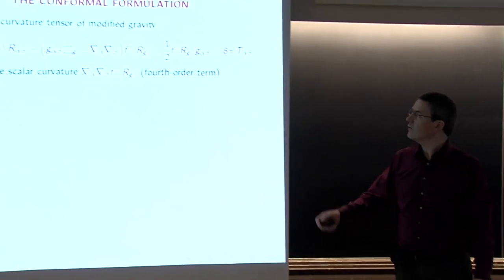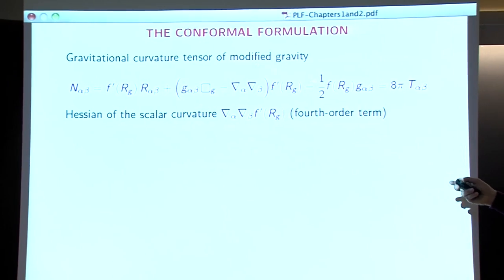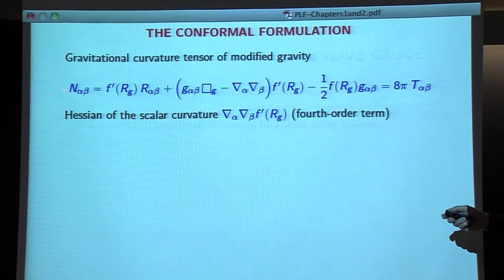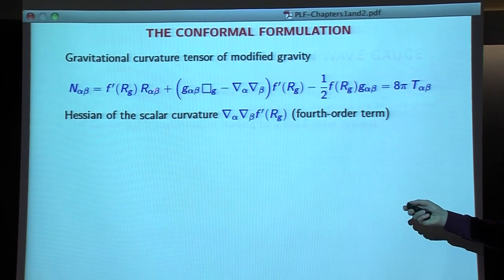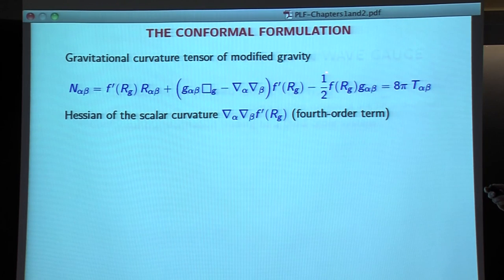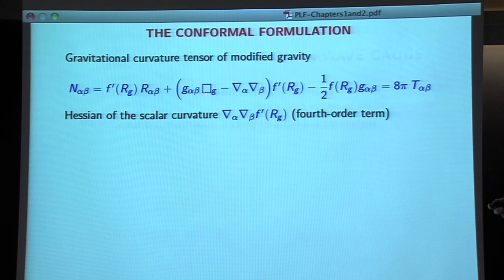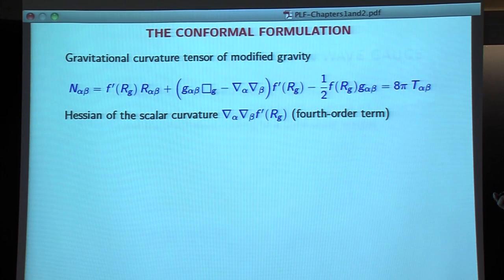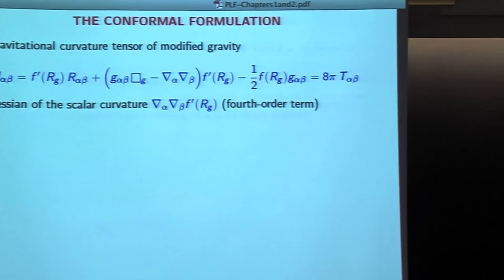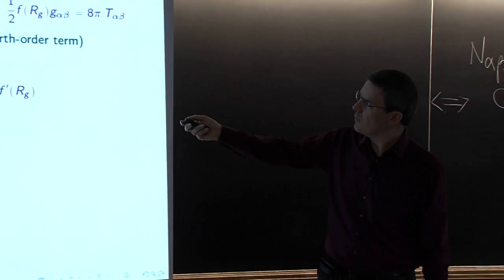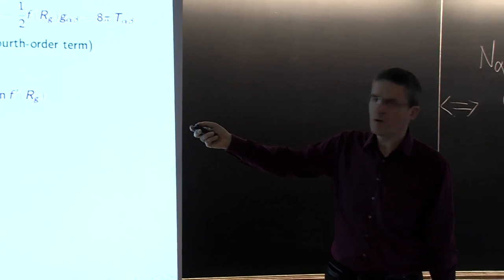We first need to do this conformal transformation. I remind you of the definition of N_αβ: it was Ricci_αβ plus a contribution involving the scalar curvature and the metric — much like you have in the Einstein equations, except there is an f(R) or f'(R) in the picture. In addition, you have second derivatives — a box operator, the wave operator — and the variation of f' of the scalar curvature. We want to realize by doing this conformal transformation that some of the difficulties in these expressions cancel out.